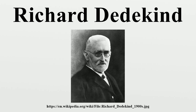In 1888, he published his short monograph titled Was Sind und Was Sollen die Zahlen, which included his definition of an infinite set. He also proposed an axiomatic foundation for the natural numbers, whose primitive notions were the number one and the successor function. The next year, Giuseppe Peano, citing Dedekind, formulated an equivalent but simpler set of axioms, now the standard ones.